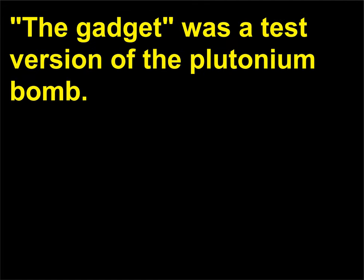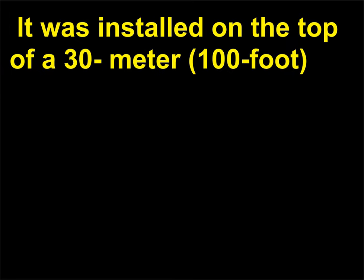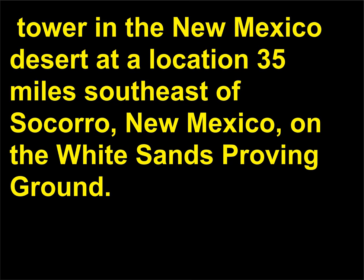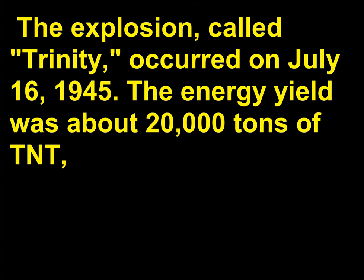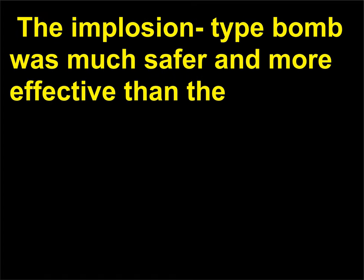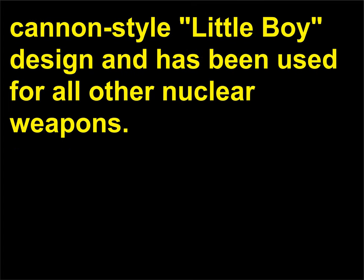The Gadget was a test version of the plutonium bomb. It was installed on the top of a 30-meter (100-foot) tower in the New Mexico desert, 35 miles southeast of Socorro, on the White Sands Proving Ground. The explosion, called Trinity, occurred on July 16, 1945. The energy yield was about 20,000 tons of TNT — more than twice what had been expected. The implosion-type bomb was much safer and more effective than the cannon-style Little Boy design and has been used for all other nuclear weapons.